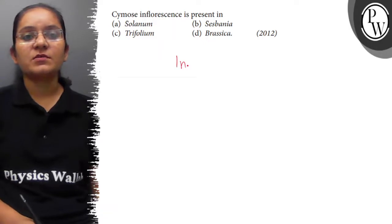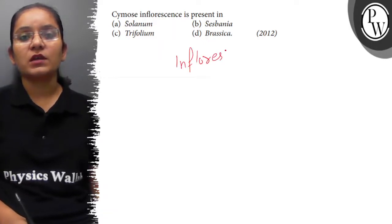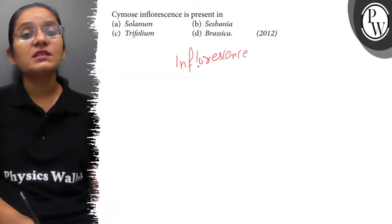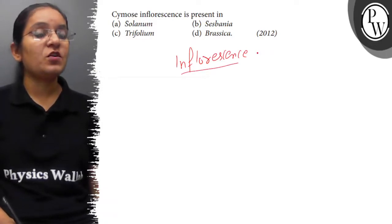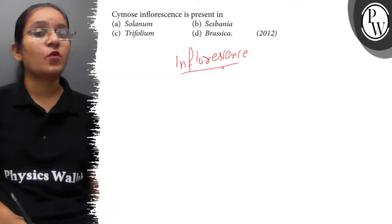So, first of all, let's understand what is inflorescence. Inflorescence means the arrangement of flower on a floral axis, and the floral axis is also known as peduncle.